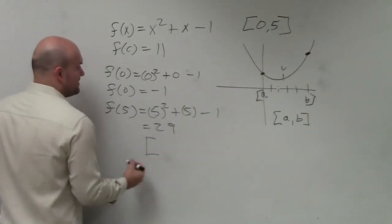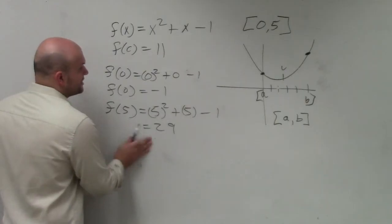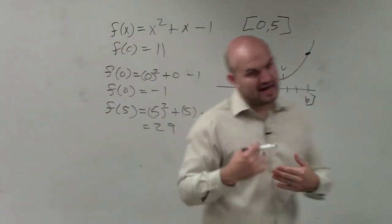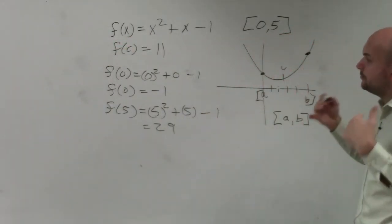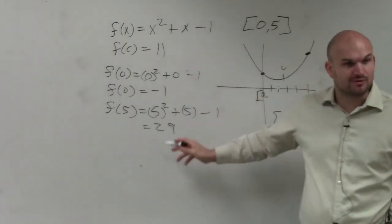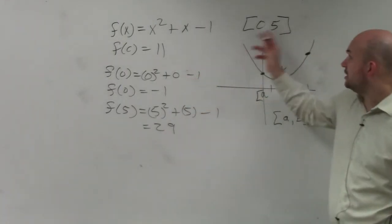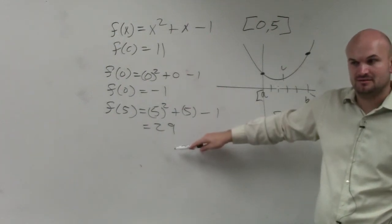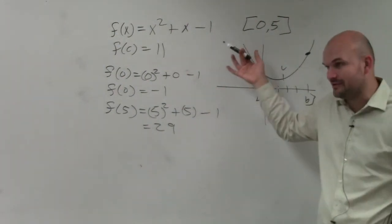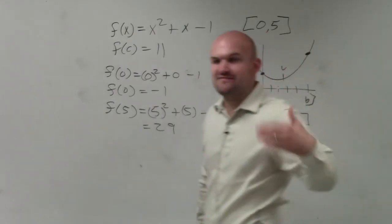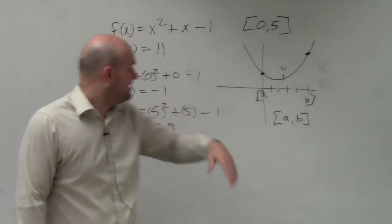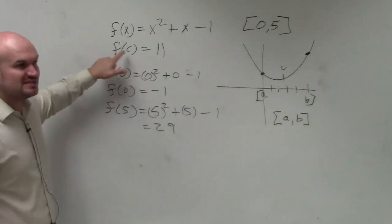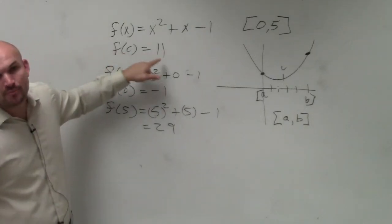So basically, our limit here is going, so between 0 and 25, my f of x, my output, is going between negative 1 and 29. Does 11 fall within negative 1 and 29? Yes, and since the function is continuous, we can use the Intermediate Value Theorem to say that there exists a value c that gives us an output of 11.